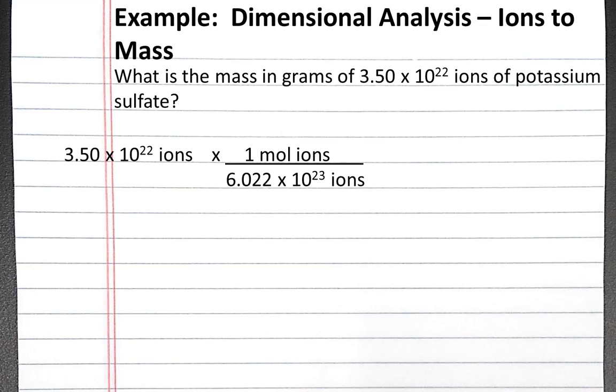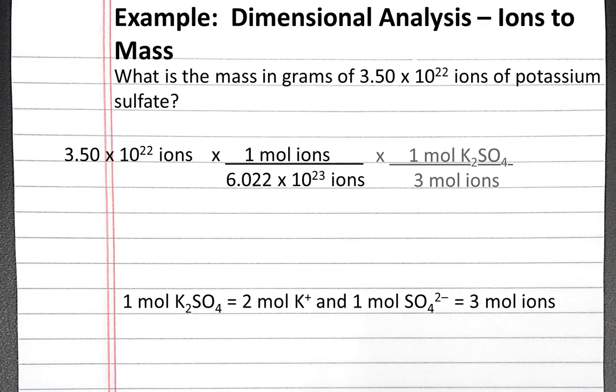Next we can convert from moles of ions to moles of potassium sulfate. One mole of potassium sulfate contains two moles of potassium plus and one mole of sulfate anions. So one mole of potassium sulfate is a total of three moles of ions. We use this as a conversion factor to get out of moles of ions and into moles of potassium sulfate.